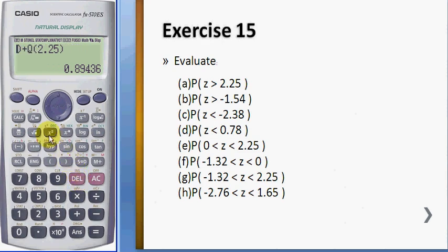And for h, we have negative 2.76 and 1.65. You calculate this as Q of 2.76 plus Q of 1.65, which gives you 0.94764.